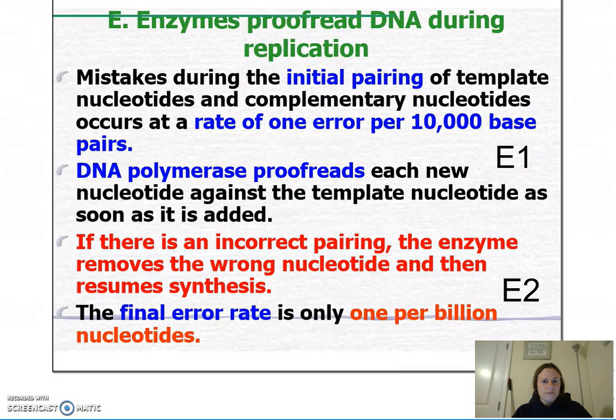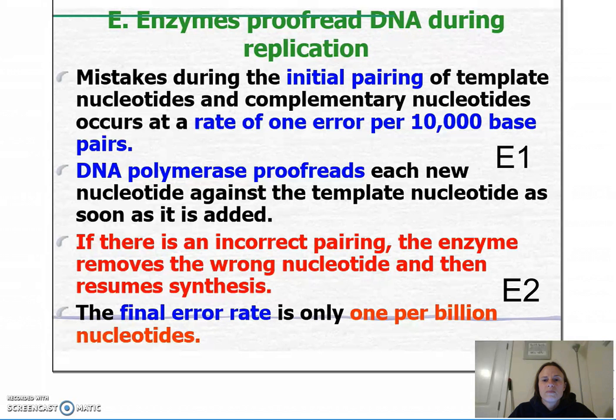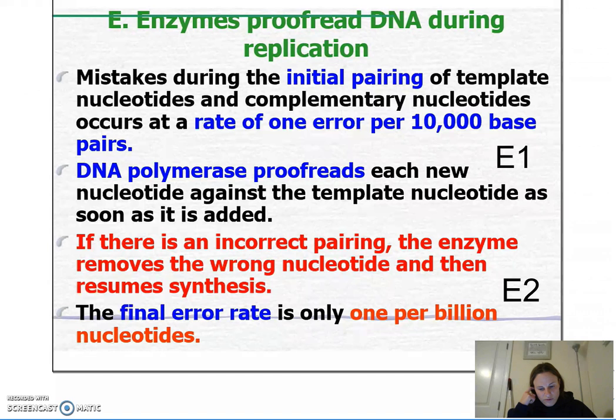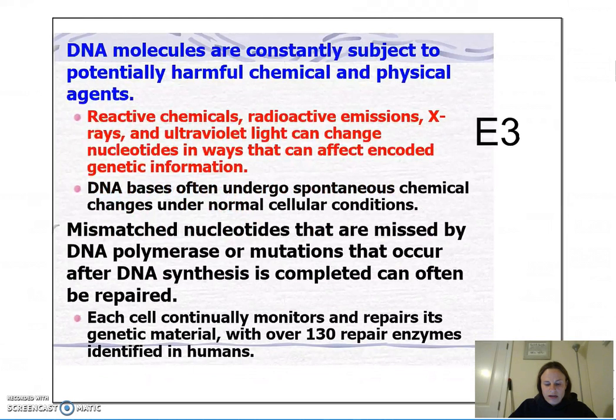During DNA replication, amazingly, there's only one error per billion nucleotides. But that's not how it starts out — initially, there's actually an error at a rate of one per 10,000 base pairs. So how do we reach that final error rate? DNA polymerase does an amazing thing: it proofreads each new nucleotide against the template nucleotide, essentially acting like a spell check. If there's an incorrect pairing, DNA polymerase recognizes it and fixes it, giving us our final error rate of one error per billion nucleotides.